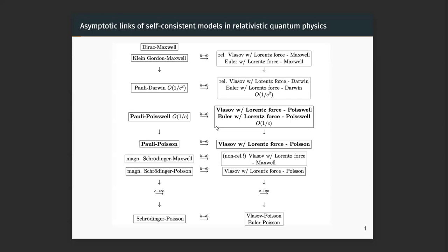In the non-relativistic limit you only have electric self-interaction, which is described by a Poisson equation — this is also the electrostatic limit. On the right-hand side you have the classical limit: if the small parameter h̄, the Planck constant, goes to zero, you arrive at classical models. There you have either Vlasov equations — kinetic models — or Euler equations — fluid models — depending on which method you use.